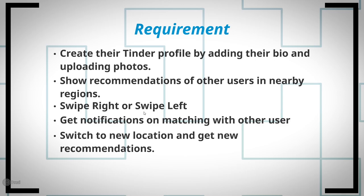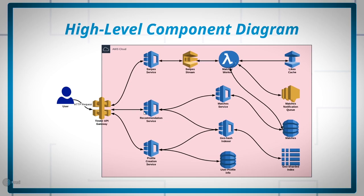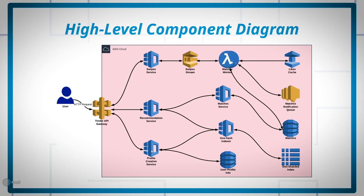Starting with the customer: the user interacts with the Tinder API gateway to perform any of three actions — registering, swiping, or asking for user recommendations, or profile creation. Once the action lands on the Tinder API gateway, it gets forwarded to a fleet of profile creator services, recommendation services, or swipe services based on the action performed. For user profile creation, user information gets stored in a user profile info database, and the user is also added to the geo-sharded index, which allows them to show up in recommendations for other nearby users.